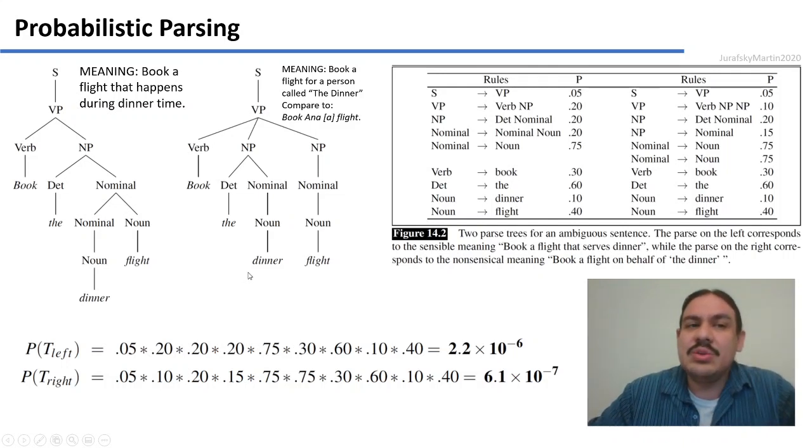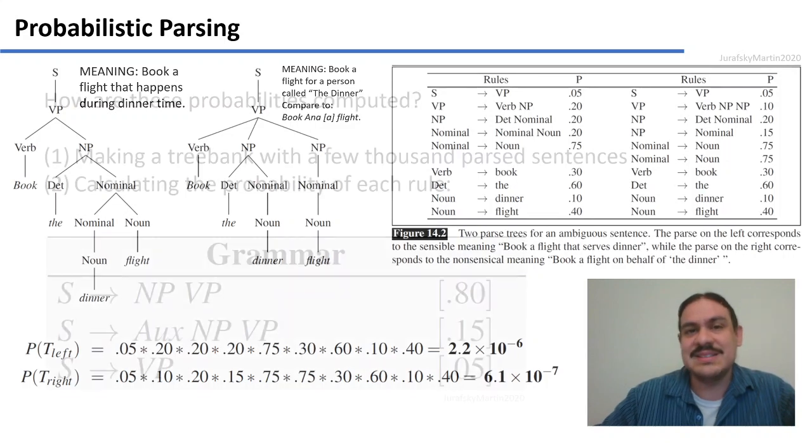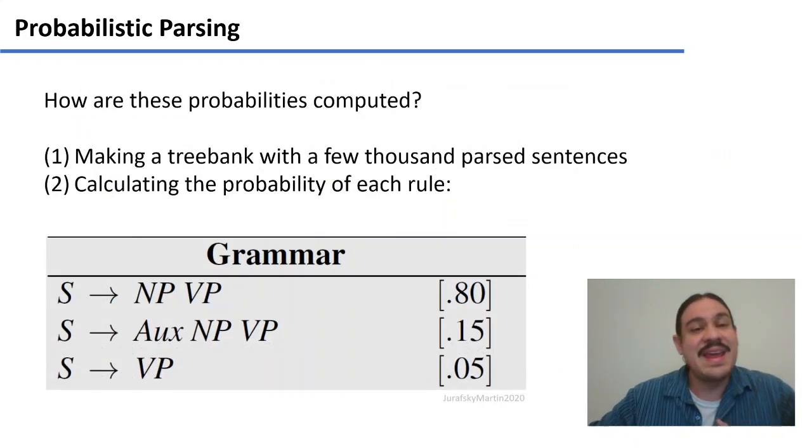So this is how we can use probabilistic parsing to improve our understanding of sentences. Again, how do we get these? We make a tree bank with thousands of sentences and then we calculate the probabilities of the rules. And that's what we use, one of the main things that we use tree banks for.